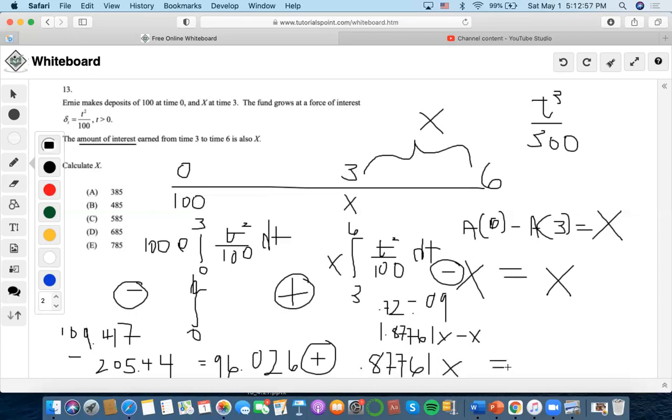We set the whole thing equal to x so we could find the amount of interest. So this is the total interest from time 3 to 6. Now let's do x = 96.026 divided by 0.12239, which is 0.12239. And we end up getting 784.59 as the answer. Voila.